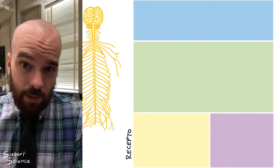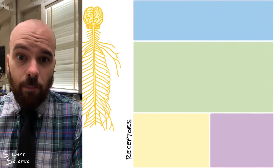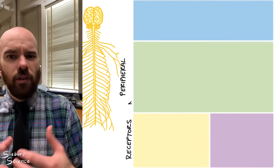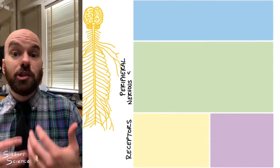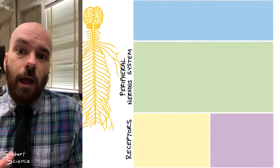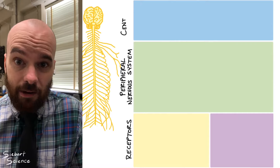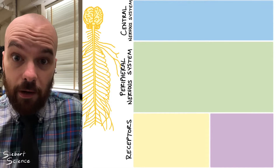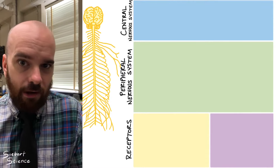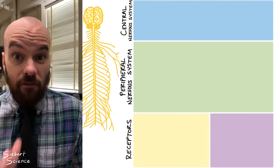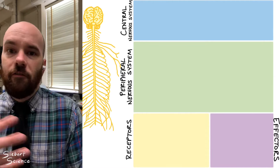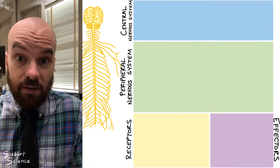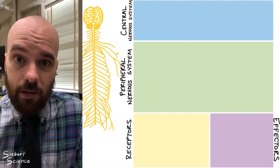On the bottom left here, we have receptors. Above that, we have the peripheral nervous system, which includes all of the nerves that branch out of the brain and the spinal cord. At the top of our diagram, we have the central nervous system, and that is the brain and the spinal cord. And then in the bottom right of the diagram, we have effectors. Effectors are all the different organs in our body that can produce some response to information that we brought into the body.